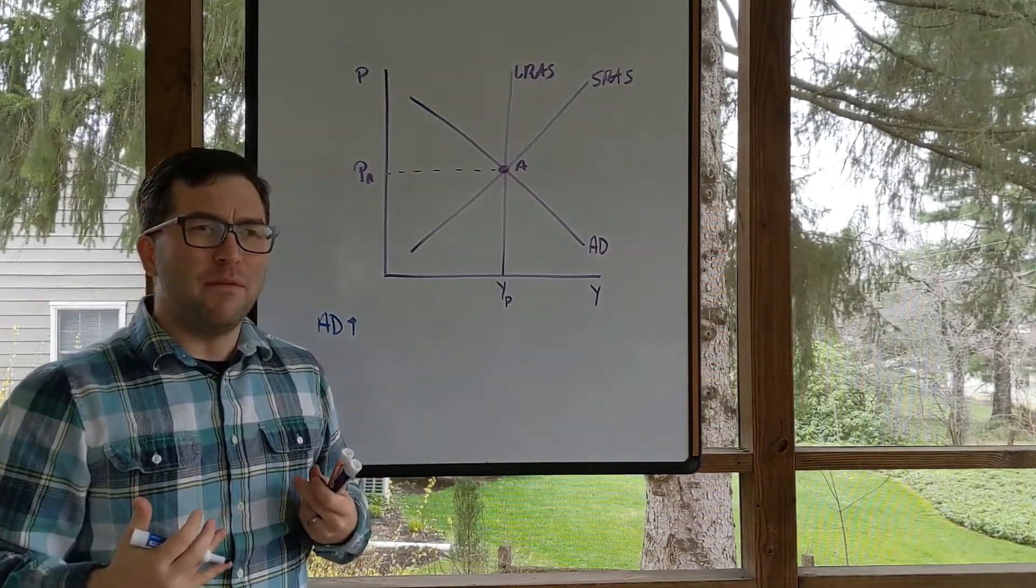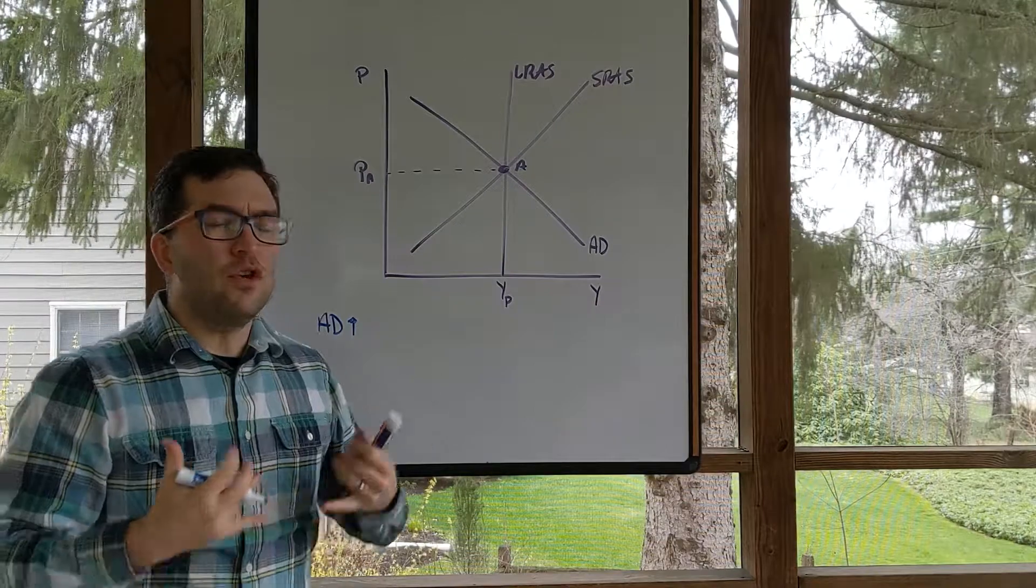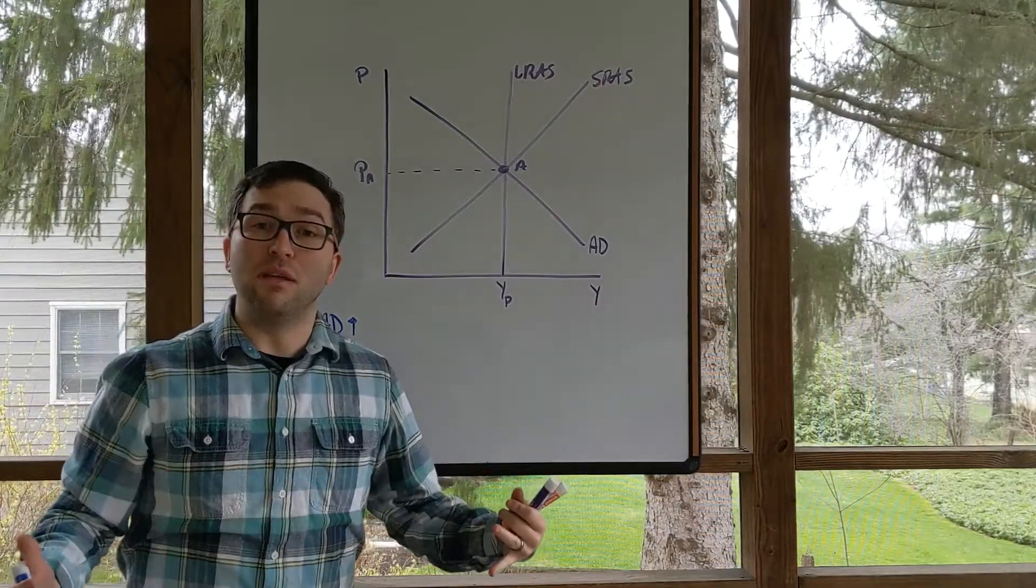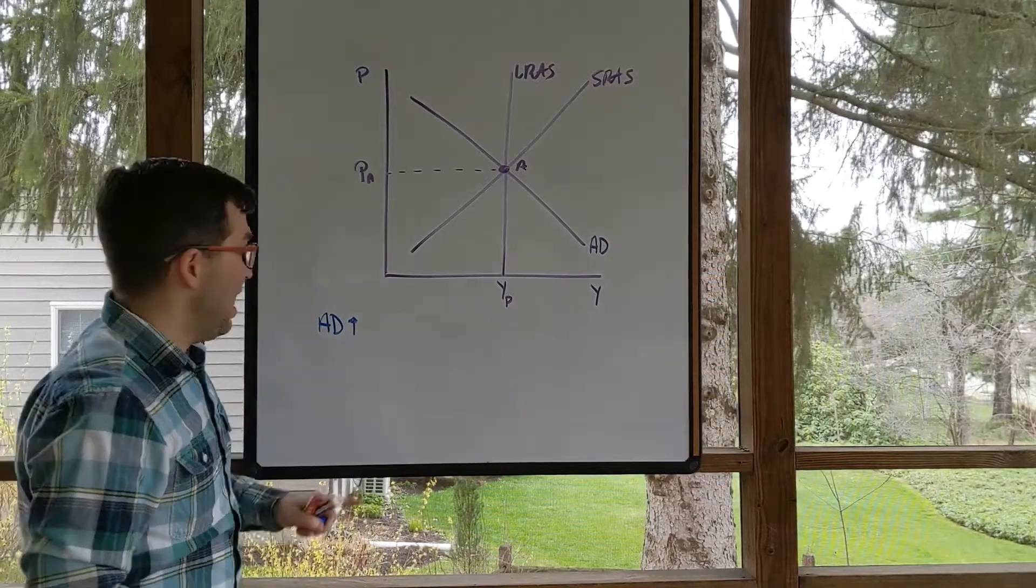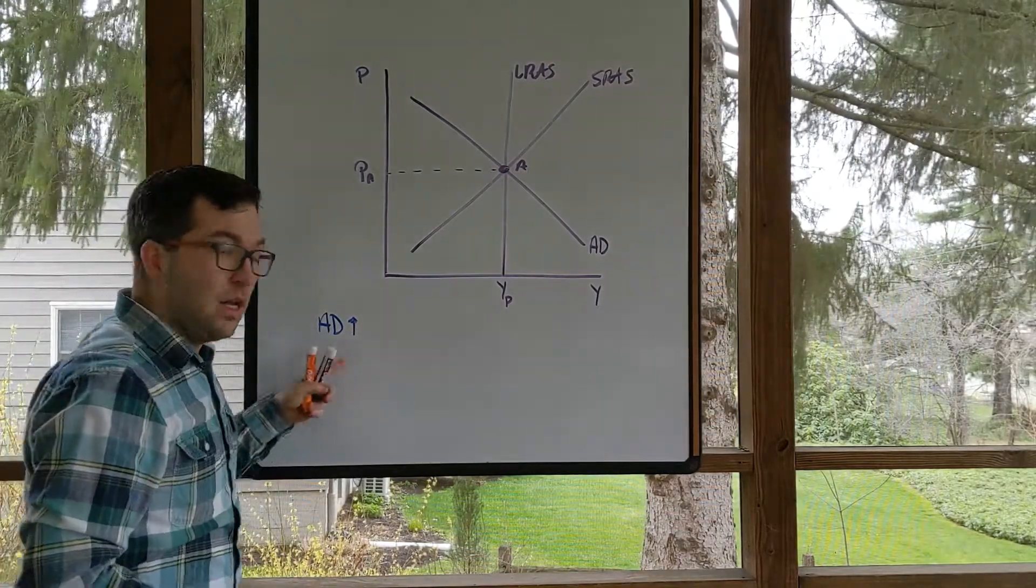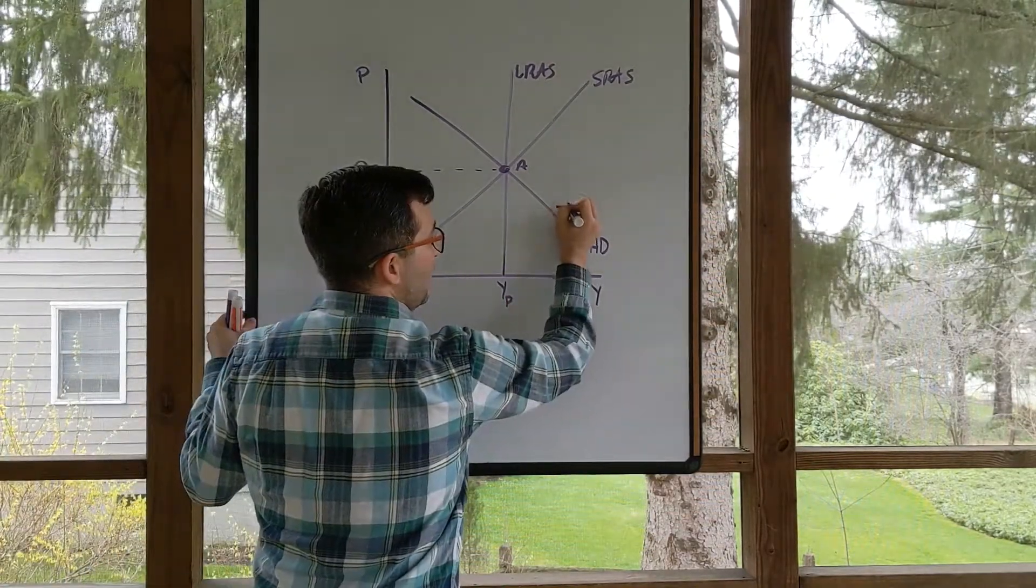So, for example, what would happen if we saw, let's say, the US dollar become weaker, holding all else constant and we're looking at the US economy? We see aggregate demand increasing. So, this would shift aggregate demand to the right.